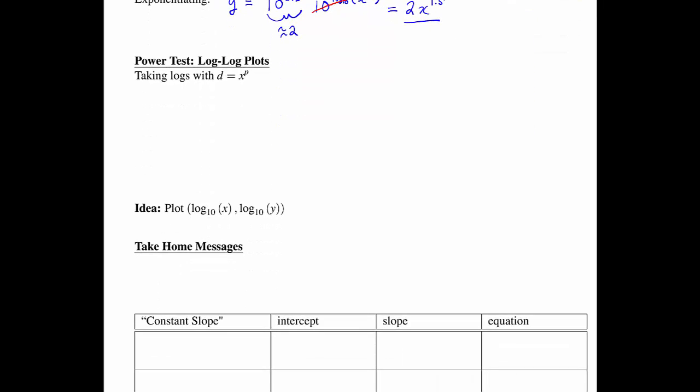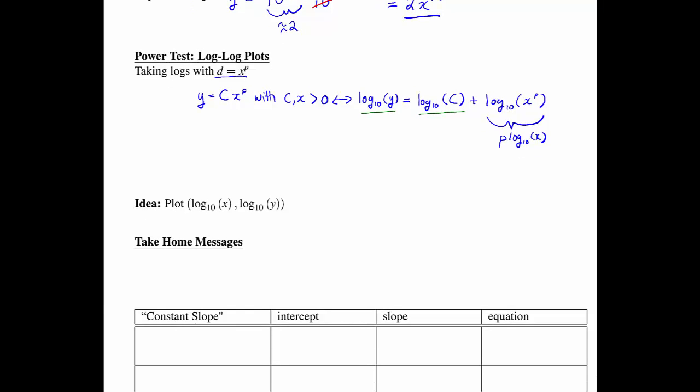If we just look for a second why this worked, what we could do is go back to our taking logs idea, but now take d to be x to the p. If we do that, then the power relationship is y equals c times x to the p with c and x positive. That's equivalent to log of y being equal to log of c plus log of x to the p. But again, we can take that power of p outside in front of the log. And this is the equation of a line. You have the new dependent variable in log scale y equals some constant plus another constant, which is p, times the new independent variable in log scale. This is a line with slope p and y-intercept log c. And the idea was to plot the two variables x and y, but both in the log scale.